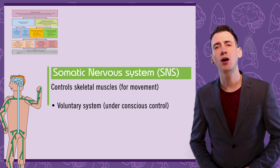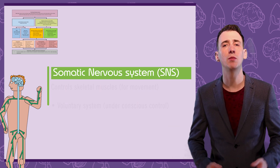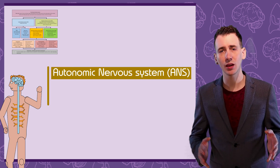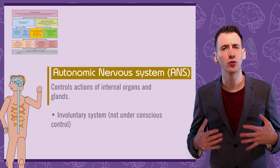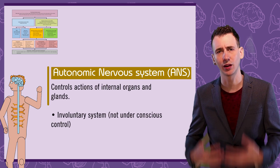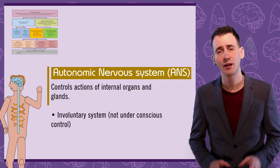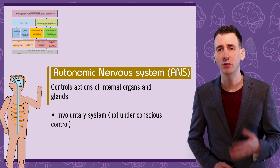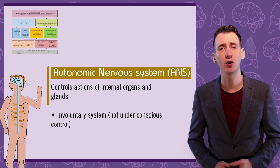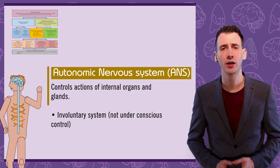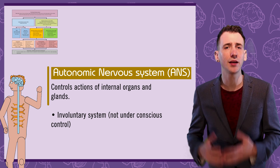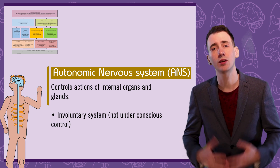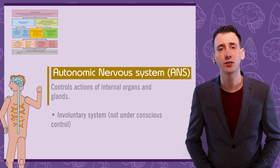And the other part is the autonomic nervous system, or ANS. This is how you control your internal organs and glands. This is an involuntary system, meaning it's not under conscious control. So you don't decide to beat your heart faster or release more insulin from your pancreas.